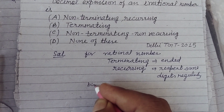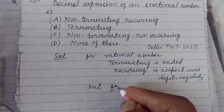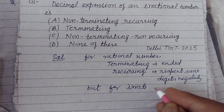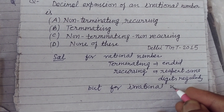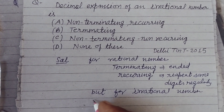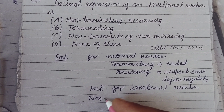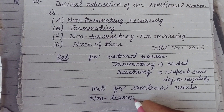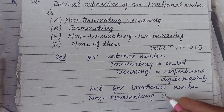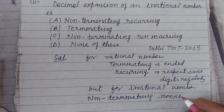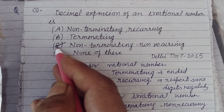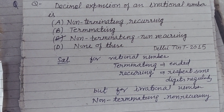What about an irrational number? They should be non-terminating, non-recurring. So the answer to this question lies in option C. Option C is correct.